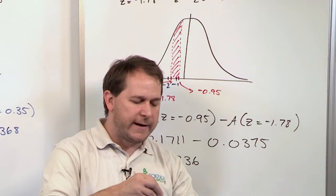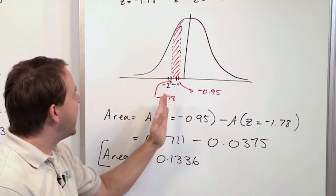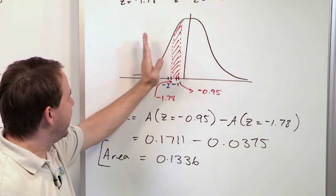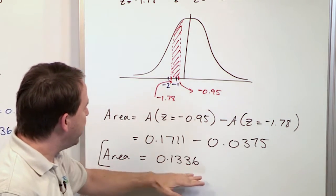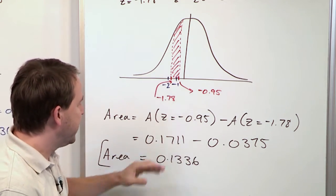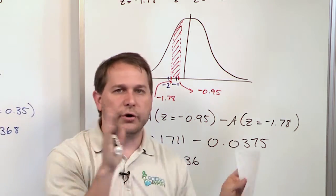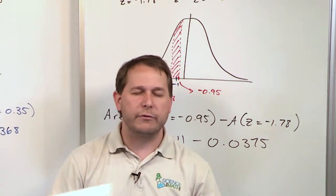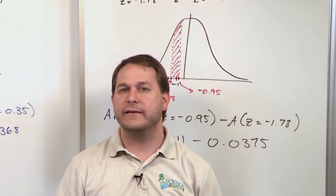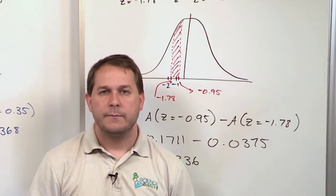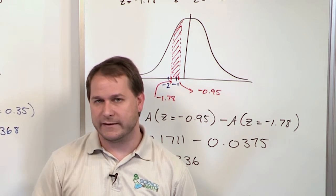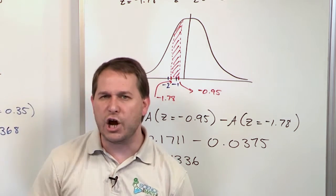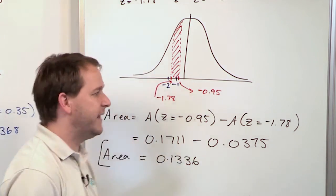I'm intentionally choosing the larger answer from the table first so I get a positive result. But if you accidentally reverse the order and do the subtraction backwards, you'll immediately know it's wrong because you'll get a negative answer. These answers can only be positive — probability and surface area are always positive. If you get negative 0.1336, just drop the negative sign and that's your correct answer.